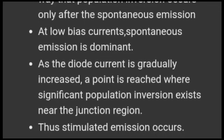At low bias currents, spontaneous emission is dominant. As the diode current is gradually increased, a point is reached where significant population inversion exists near the junction region. Spontaneous emissions increase, electrons in the excited state increase, and recombination increases, leading to greater population inversion.